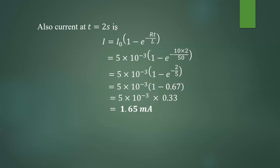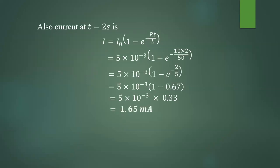Most of you have given the correct answer. Very few have given a wrong answer — you may have made a mistake in calculating e to the power minus 2 by 5. That should be done properly. The power minus 2 by 5 must be kept in brackets: e to the power (minus 2 by 5). If you don't use the bracket for this power, you may get a wrong result. Therefore, do the calculation properly in the scientific calculator. This gives 1.65 milliampere as the current in the circuit.